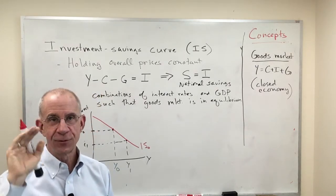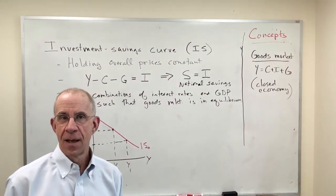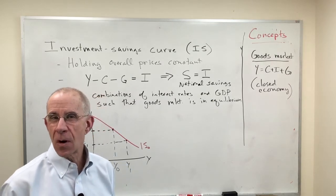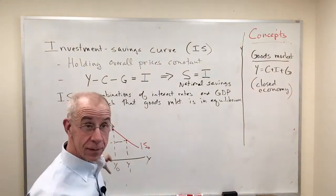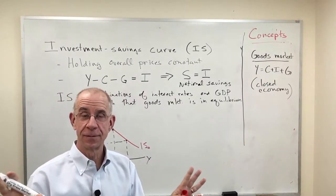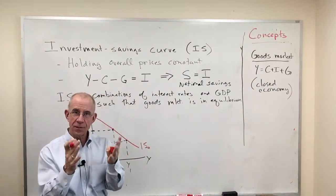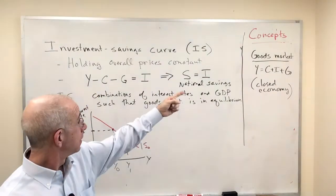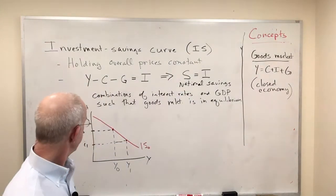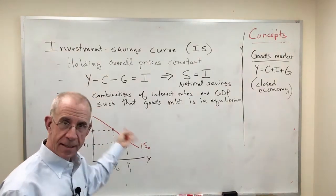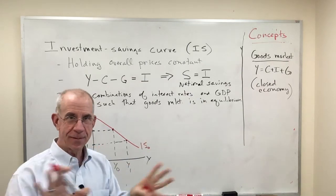There are generations of students who look at that and say the IS curve is the goods market, interest rate going down is kind of like a price. It's not a price. These are equilibrium conditions — these are interest rates and output combinations where that goods market condition holds. Yes, it slopes downward, and yes, so does the demand curve. That doesn't mean they're the same thing. You don't have price on this axis — you've got the interest rate.